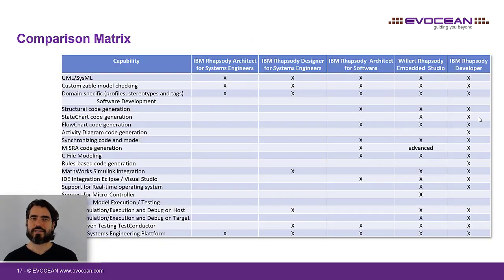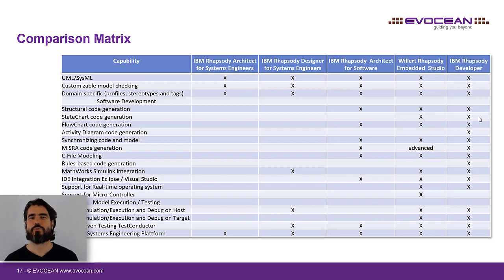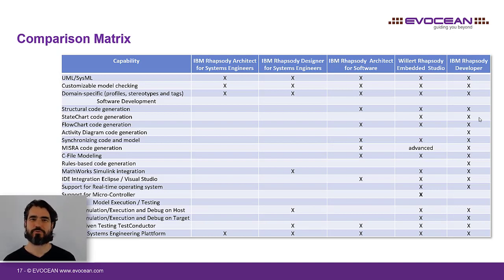To summarize all this, I have put together a comparison matrix that compares the functionality of the different editions. It's a reduced representation. For more detailed information, I refer you to the IBM or Willard Rhapsody product information.